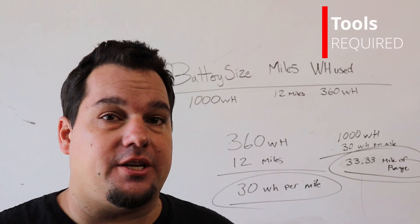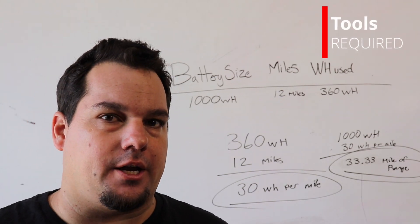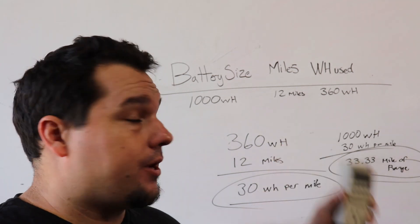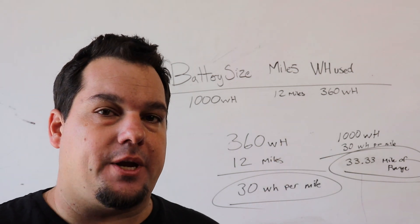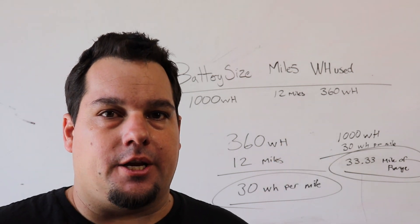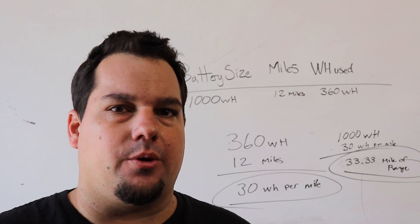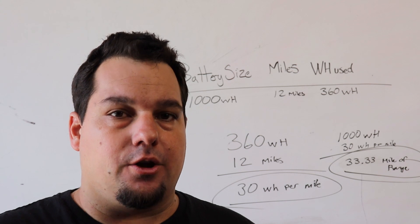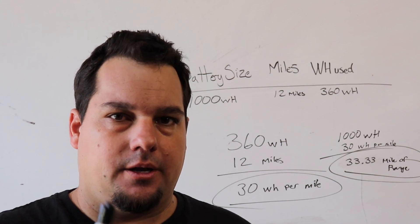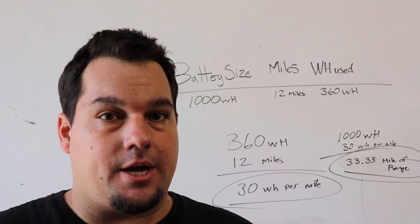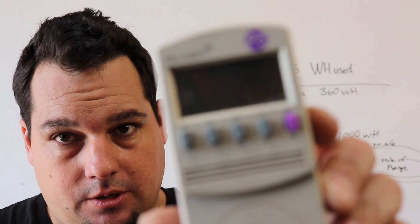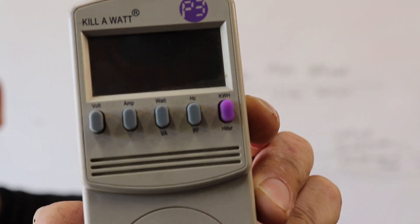Okay, so one thing that I didn't mention yet is how did I get that number? How did I get the 360 watt hours used? So basically, like I said in the beginning, you need to take your battery pack and completely charge it all the way up. And go for your ride, come back, and you need to charge it all the way up again using, it's one of these, it's called a kilowatt meter.